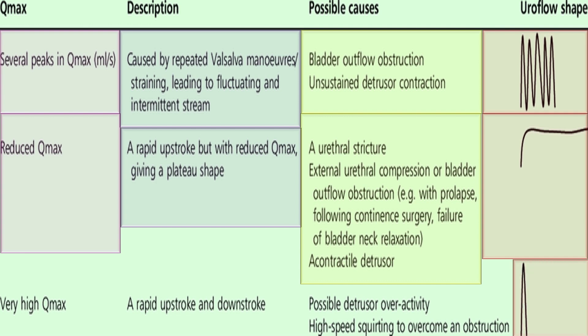The last pattern shows very high Qmax with a rapid upstroke and downstroke. The reason may be possible detrusor overactivity or high-speed squirting to overcome an obstruction.